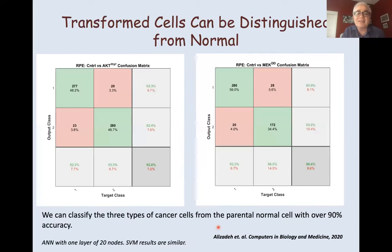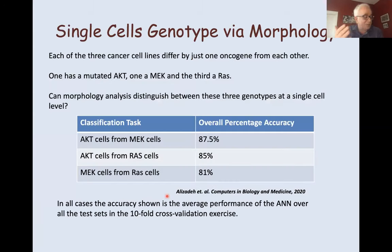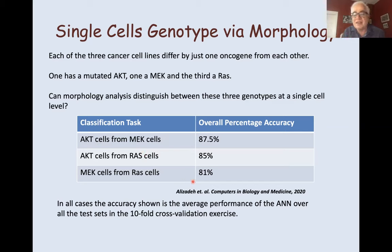The first result is that this is actually surprisingly accurate. Transformed cells can be distinguished from normal with very high accuracy. We get over 90% accuracy when doing binary classification between transformed cells and normal cells. We can also ask whether we can distinguish the transformed cells from each other — AKT cells from MEK cells, for example. Recall the three oncogenic transformations were AKT, MEK, and RAS. We can actually distinguish these three from each other with fairly high accuracy, above 80% in all cases.